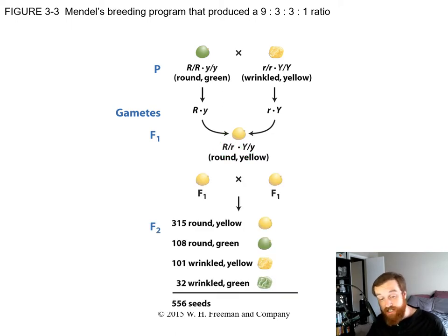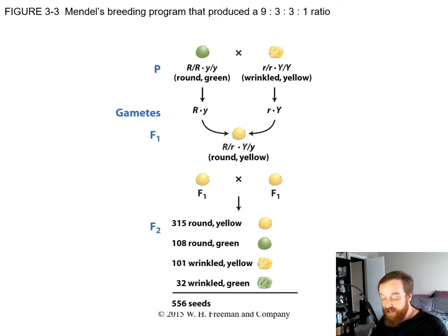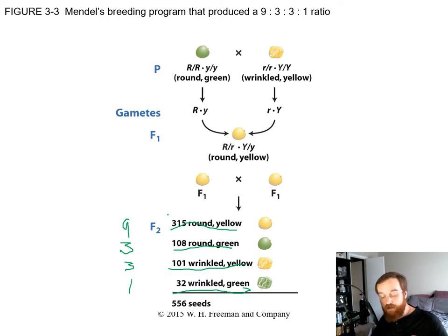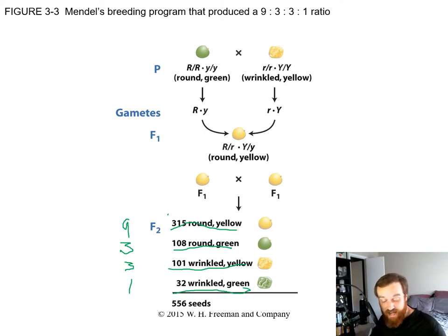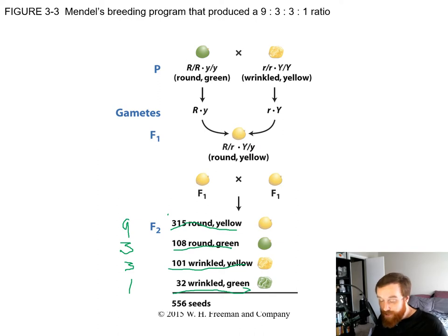Similar to the monohybrid cross in chapter two, if you self the first filial generation, you get a lot of offspring. If we count the individuals produced, we get a ratio that ends up roughly nine to three to three to one. Remember, last chapter, selfing a heterozygous gave us a three to one ratio. Now with two genes, we get this nine to three to three to one ratio — important ratios to remember.